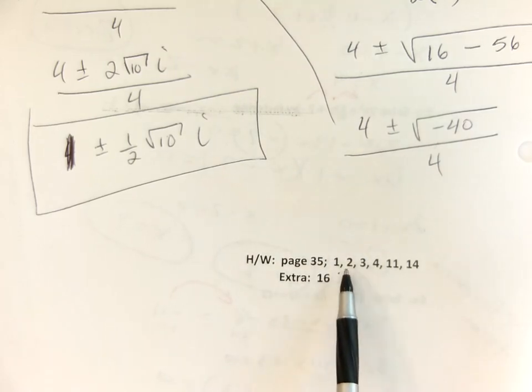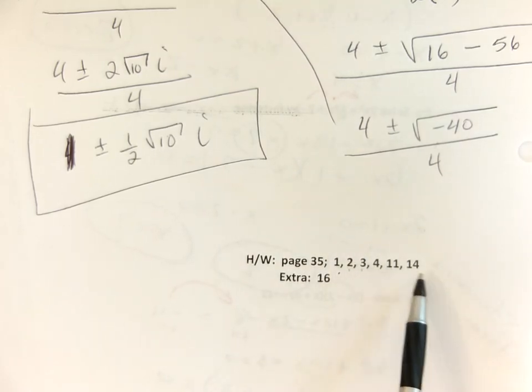I didn't give a lot, right? 1, 2, 3, 4, 11 of 14, the extra is 16. We'll do two days of this. I'll get you.